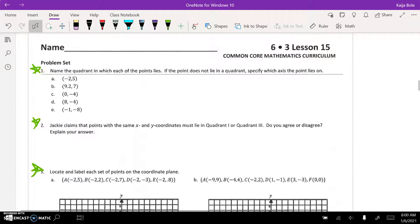First question says name the quadrant in which each of the point lies. If the point does not lie in a quadrant, specify which axis it lies on. Remember the quadrants, you might want to draw yourself the picture: 1, 2, 3, and 4.